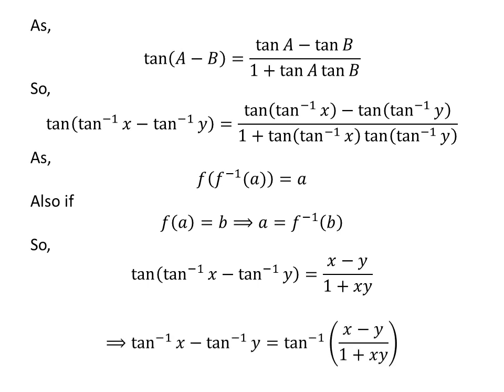So arctangent of x minus arctangent of y is equal to arctangent of (x minus y) upon (1 plus x times y), so the identity is proved.